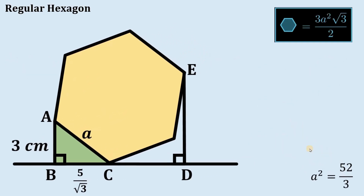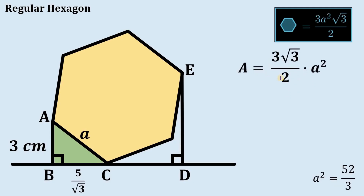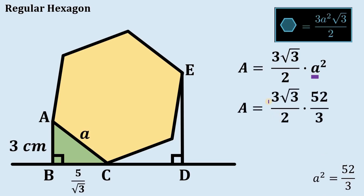We will use the value of a² to find the area of the hexagon. The area of the hexagon equals 3 times square root of 3 all over 2, times a². We now substitute a² equals 52 over 3. The 3s cancel out, and 52 divided by 2 gives us 26.